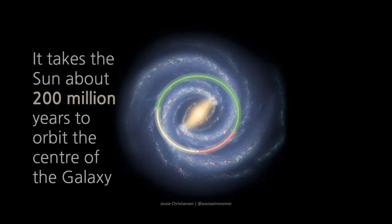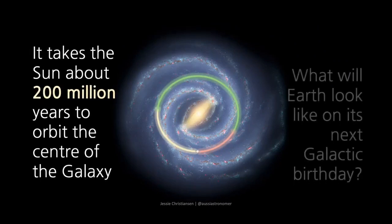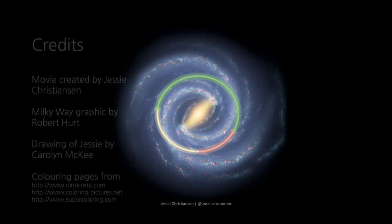It takes the Sun about 200 million years to orbit the center of the galaxy. What will Earth look like on its next galactic birthday?